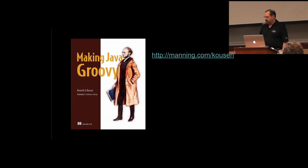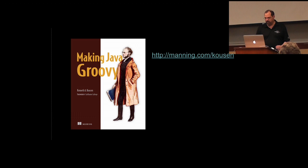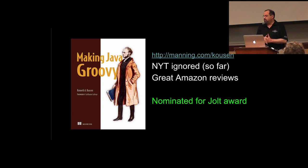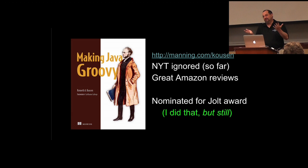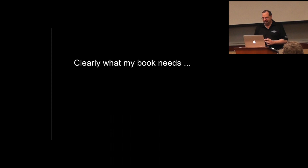One of those things is working with NoSQL databases, and another is working with RESTful web services. The New York Times has so far kind of ignored it, but the reviews at Amazon have been very good. The book was nominated for a Jolt Award — it turns out you just fill out a form on the website. They accepted the nomination, so I'll let you know. Clearly, what my book needed was Groovy Vampires.